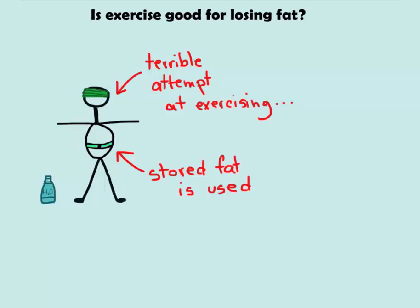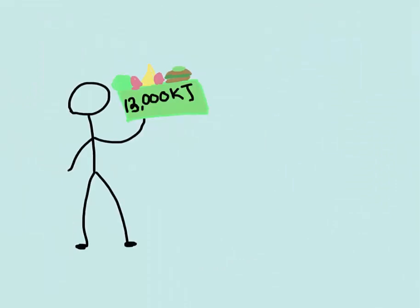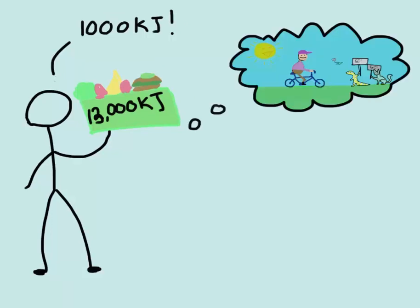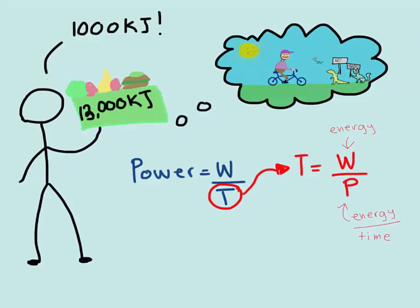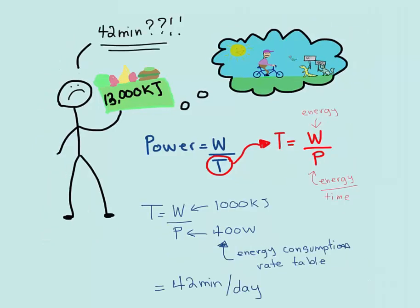We'll use an example to see how this applies to energy and power. Suppose you need 12,000 kilojoules of food a day, but you consume 13,000 kilojoules — a difference of 1,000 kilojoules. You wonder if bicycling would help burn off the extra energy. Start with power and rearrange for time. For power, use 400 watts, which is the value from your textbook for the energy consumption rate during bicycling at typical speeds. It includes the basal metabolic rate. We get 42 minutes a day — this is how much time you need to burn off the extra 1,000 kilojoules.